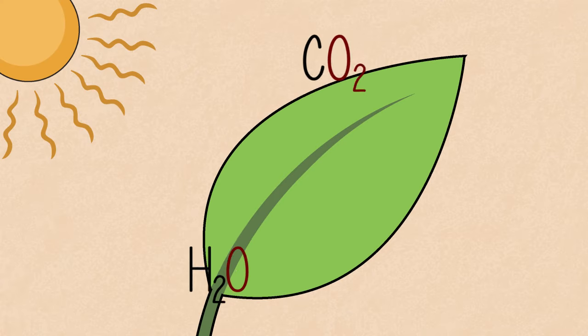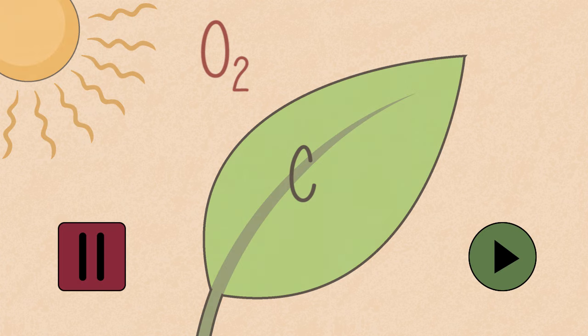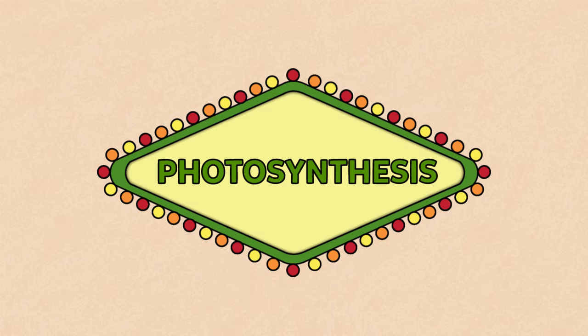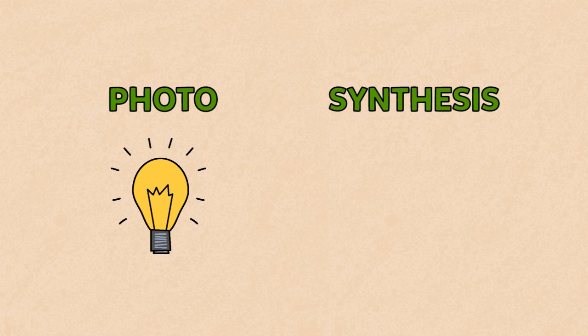What is the name of this reaction, perhaps the most important chemical reaction on the planet? It is photosynthesis. Well done if you got it right. Photo means light, and synthesis means building up.